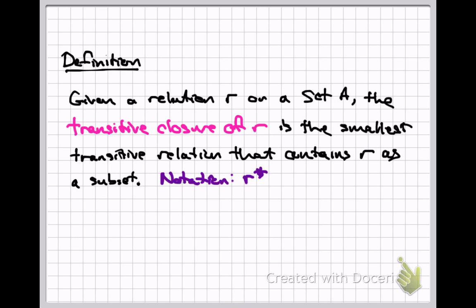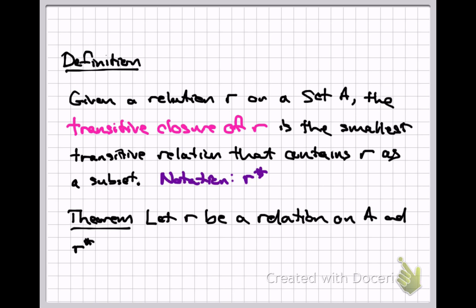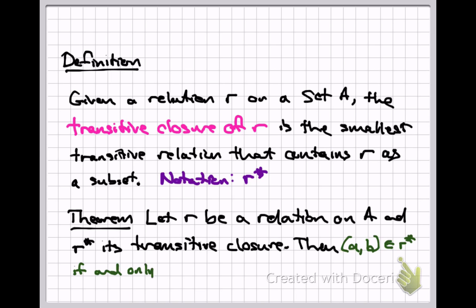Here's a helpful theorem useful for thinking about how to compute a transitive closure. Let R be a relation on A, and let R* be its transitive closure. Then a pair (a, b) belongs to R* if and only if there is a path of edges from a to b. Notice that the length of the path is not specified — it's a path of any length at all. This is what we saw in the second example, where we added an edge whenever there was a path of followers from one user to another, regardless of length.